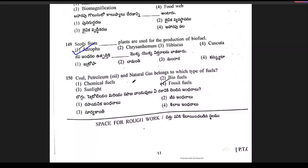Last question: coal, petroleum, oil and natural gas belong to which type of fuels? That is very easy — they are fossil fuels.